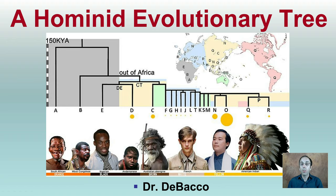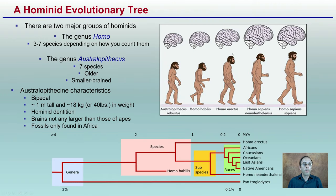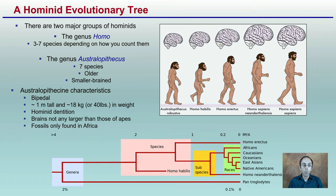Here we're going over a hominid evolutionary tree, giving some background information on predecessors to modern-day Homo sapiens. There are two major groups of hominids: the genus Homo, comprised of about three to seven species depending on how you classify them, and Australopithecus, which has seven species and they're older and smaller-brained. These Australopithecus characteristics include being bipedal, about a meter tall, and about 18 kilograms in weight — you can see the different structures of these individuals in comparison to the Homo genus.